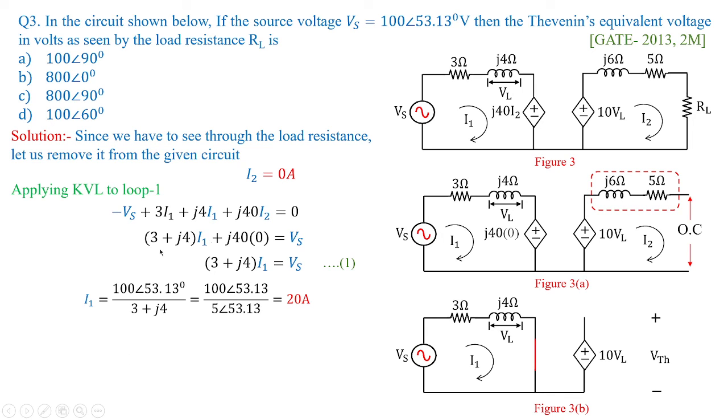Now, I1 can be obtained as the source voltage is given in the polar form and the impedance value is in the rectangular form. I change it to the polar form for the convenience. Then I1 is obtained as 20 amperes. Now these two equations we have framed.